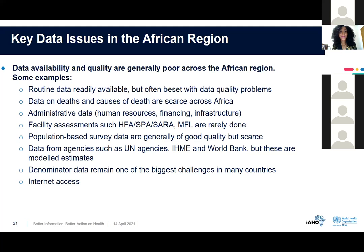Population-based surveys: the quality of these data are generally good, but surveys are not done — only a few countries try to do population-based surveys. Then we have data from agencies such as WHO, IHME, and others. These are the data many countries fall back to because they are always available. But these data are modelled estimates — they don't really tell you about the facts on the ground; they just give you an indication of what potentially could be happening. Many countries are also struggling with reliable denominator data. When they compute the coverage of some interventions such as immunization, you find coverage of 200%, 300%, above 100%, which indicates challenges related to the denominator data.